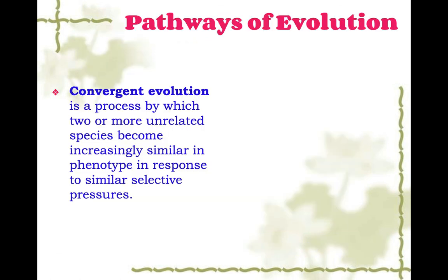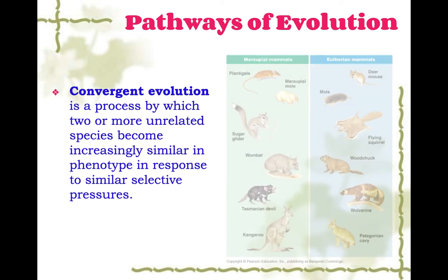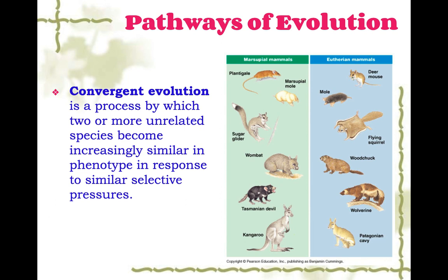Convergent evolution is a process by which two or more unrelated species become increasingly similar in phenotype in response to similar selective pressures. A diagram shows marsupial mammals and placental mammals from different areas of the world — for example, the marsupial mole and our mole don't share a common ancestor, but they look very similar because they filled a similar niche in the environment.